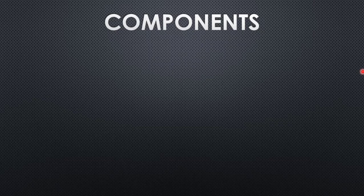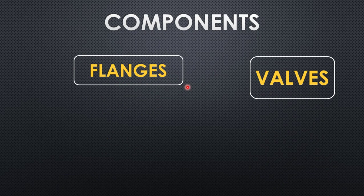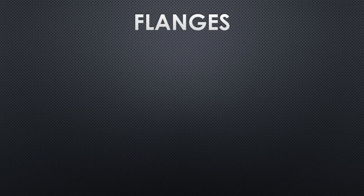In today's video we are going to discuss about the very important components which are flanges. We are going to cover 4 important areas: flanges less than 24 inch, flanges above 24 inch, spectacle blinds, and orifice flanges. In addition to flanges, we are also going to see the dimensional standards for valves.